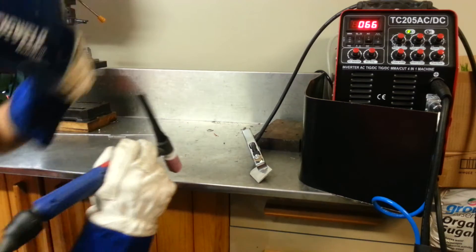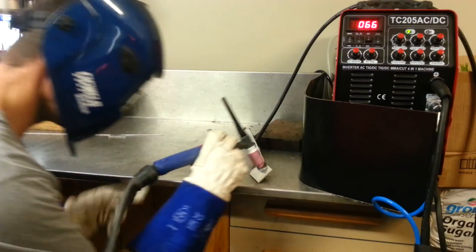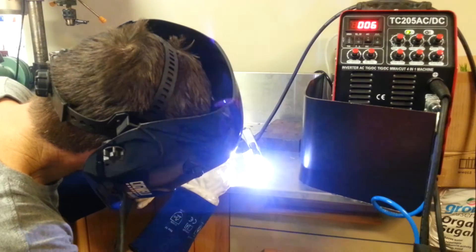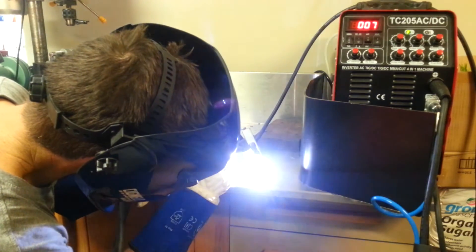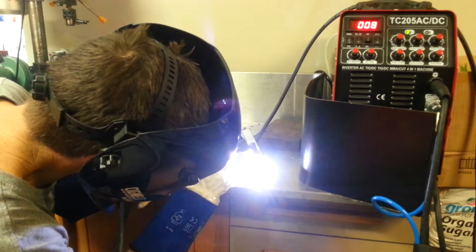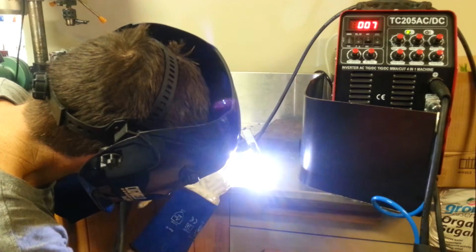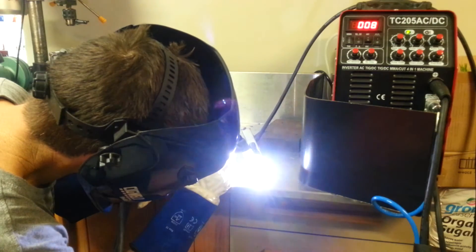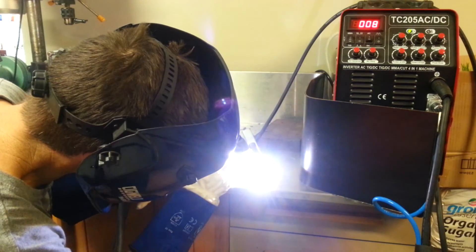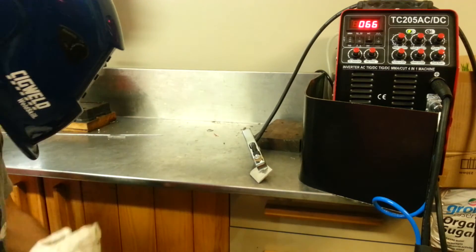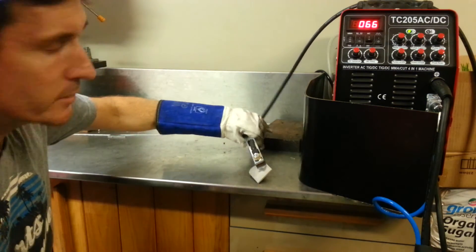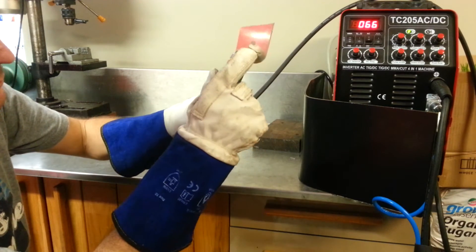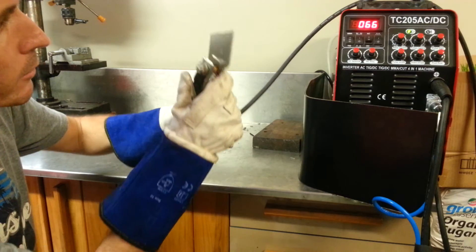So you can see the current of 66 amps. I just held the electrode in one spot and all I got was a little mark on the aluminum.